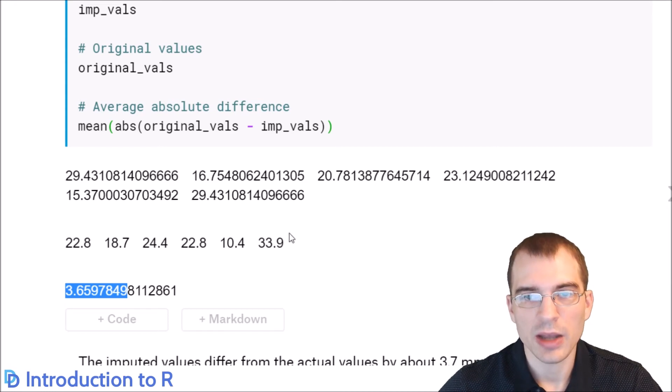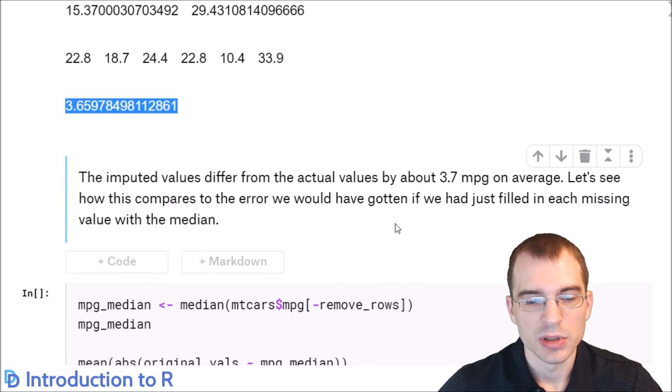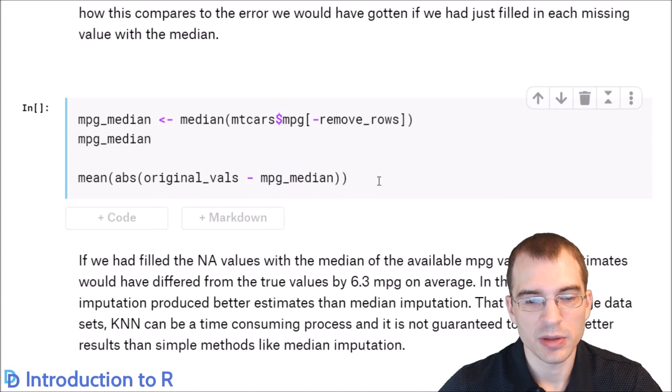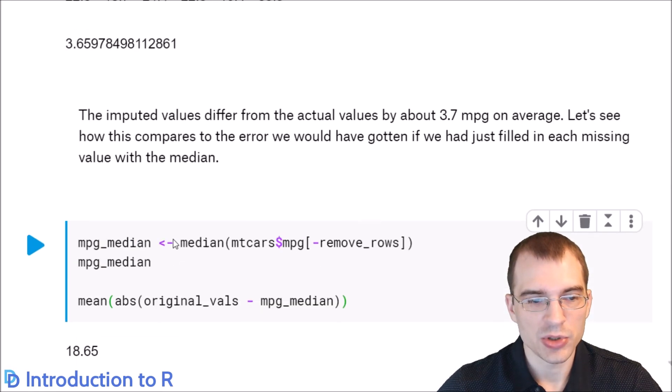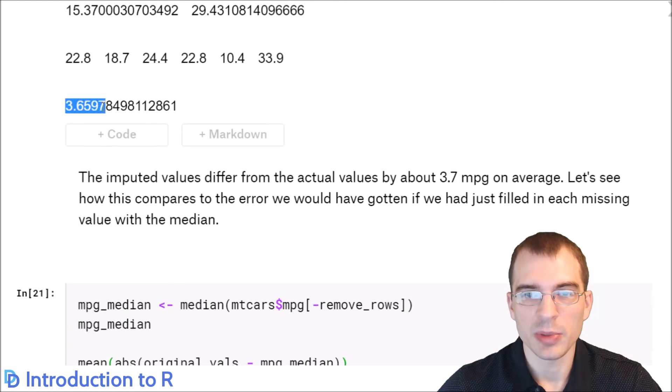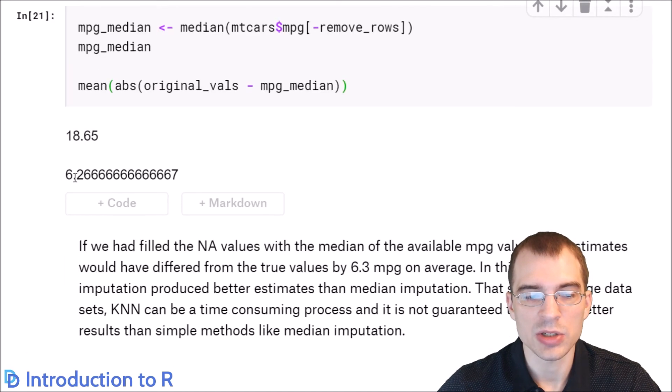Let's fill in the missing values with the median this time and compare to our other predictions. I'll run this and see how much error there would have been if we used the median instead of our KNN technique. You can see if we had filled with just the median value, the average error would have been 6.26 MPG. So using the KNN method, we actually had quite a bit less error in filling in those missing values than we would have had if we only used the median.